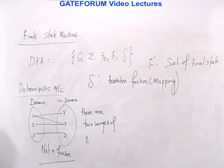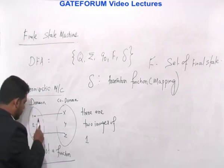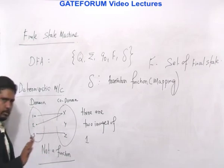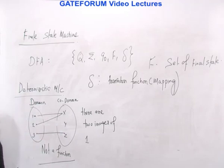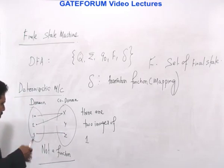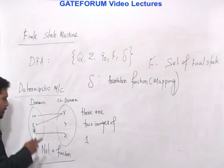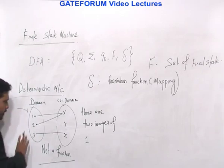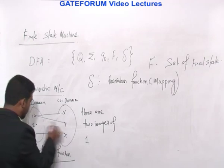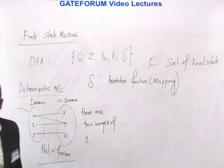There must be exactly one image. That is required. Now consider this mapping: 1 is mapped to x, 2 is mapped to y — that is okay. But there should be only one image. For instance, 1 mapped to x and 2 also mapped to x is totally fine. The previous case with two images for a single element was not a function, but having two domain elements map to the same codomain element is allowed.